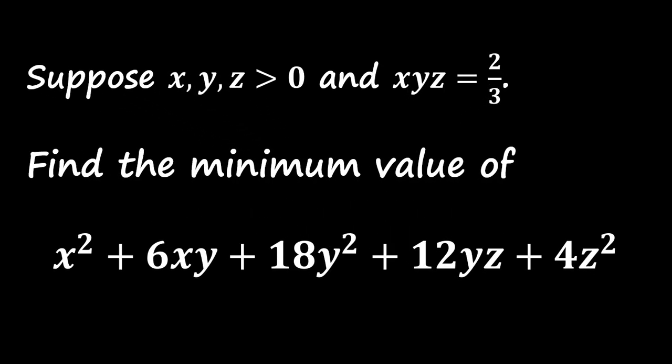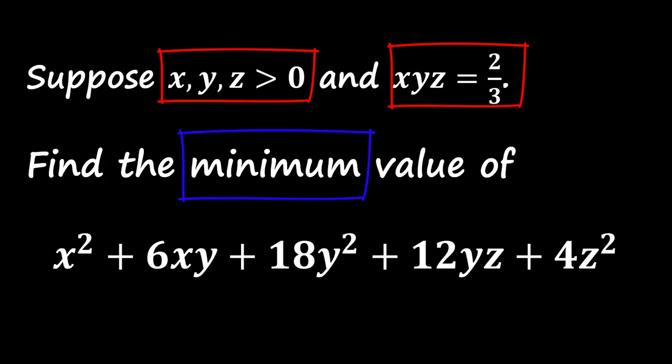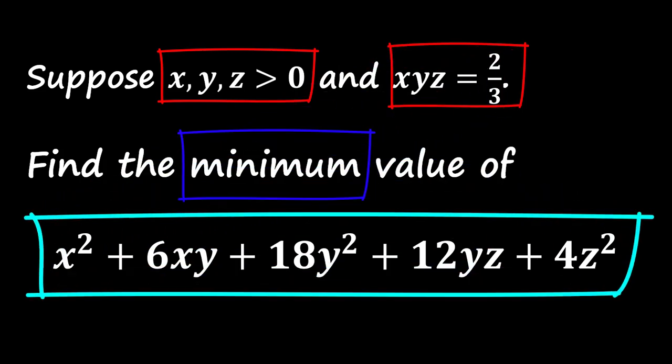Hello everyone. Today we're exploring an interesting problem involving positive variables x, y, and z, where the product of x, y, and z is equal to 2/3. Our goal is to find the minimum value of the expression x² + 6xy + 18y² + 12yz + 4z². Let's dive into it.